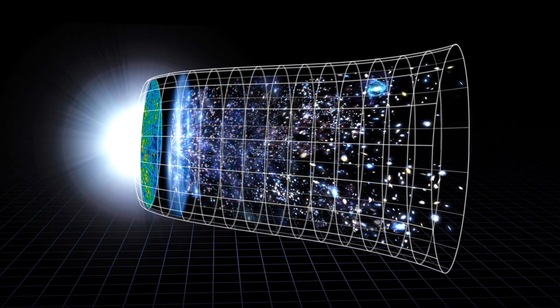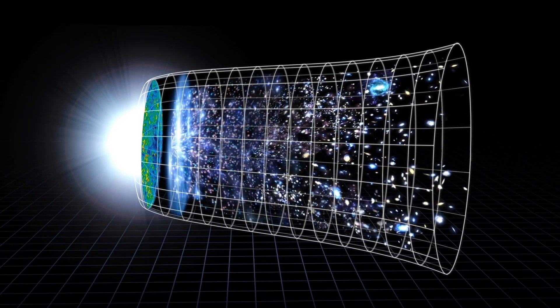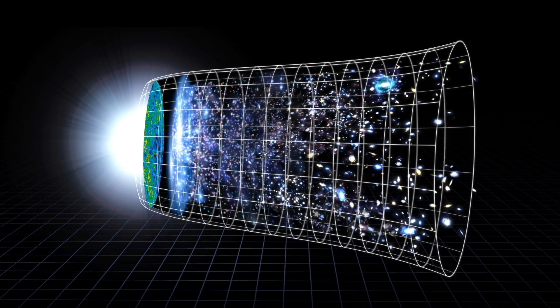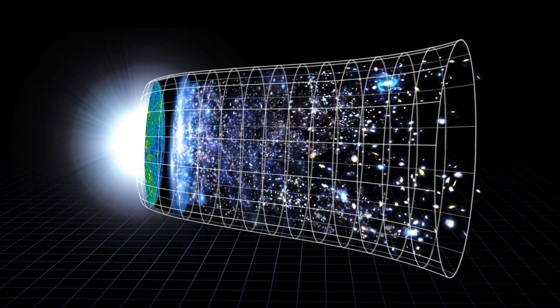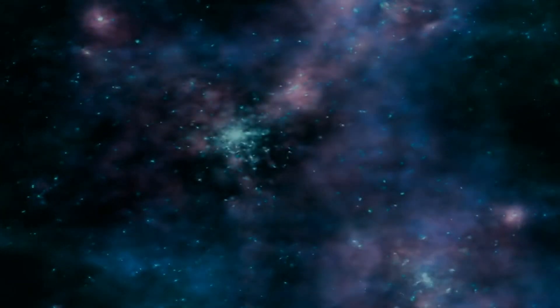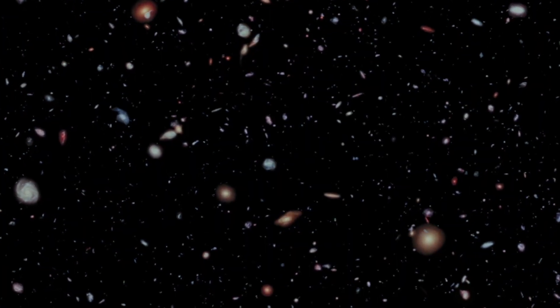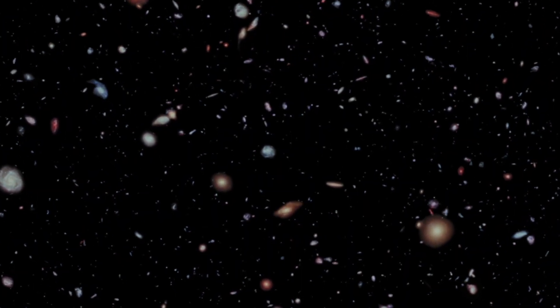It was a time when the universe was undergoing a massive growth spurt known as inflation — the universe was expanding exponentially fast, much, much faster than it's expanding today. Inflation left the universe smooth and empty due to the extremely rapid expansion. But inflation's impact on the fabric of space-time was so extreme that it led to quantum fluctuations in time. These delays and advances in time made parts of the universe a little bit denser than others. These small fluctuations led to the structures we see today. But how?